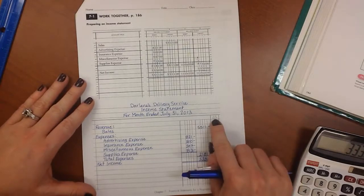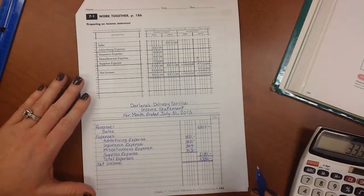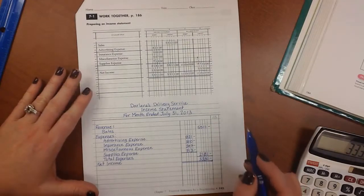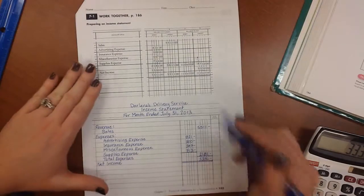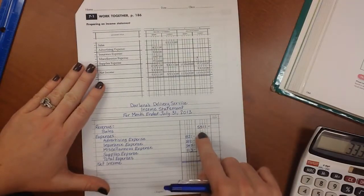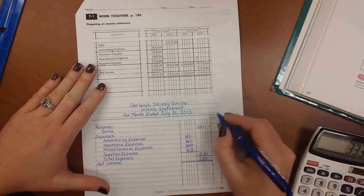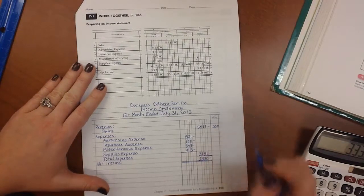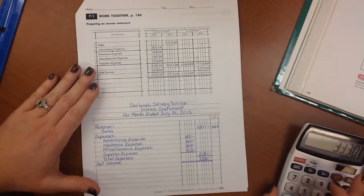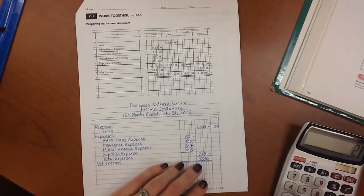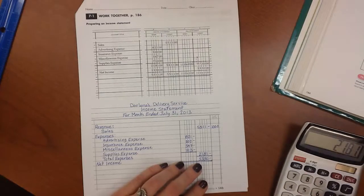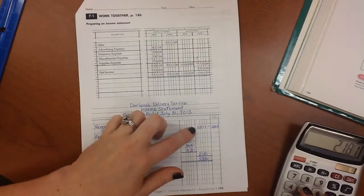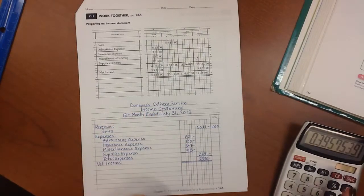We have this percent of sales column. So what we're going to do is compare everything against sales. So if I compare sales and divide it by sales, I get 100%. And we round to the nearest tenth, so it would be 100.0. Then we come here and we take 21.81 divided by sales, 55.11, equals...